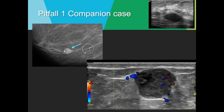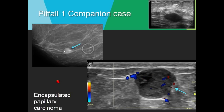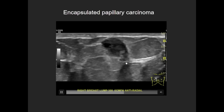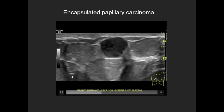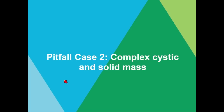The final companion case for pitfall one: a patient with a palpable mass showing mostly circumscribed margins, but with definite angular and indistinct margins on ultrasound. It had internal vascularity and some cystic change. This turned out to be a papillary carcinoma. On the clip, you can really appreciate that the margins are not completely well-circumscribed — and this leads nicely into pitfall case number two: complex cystic and solid mass.